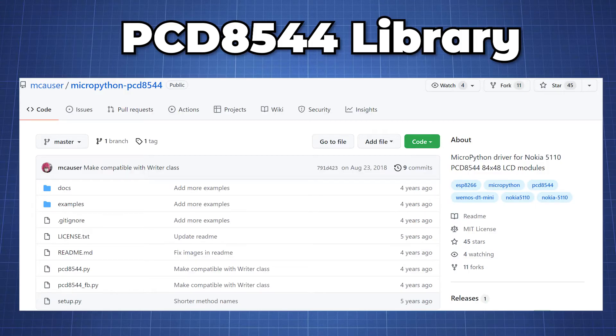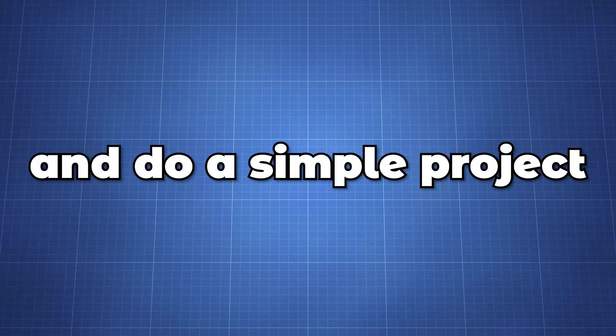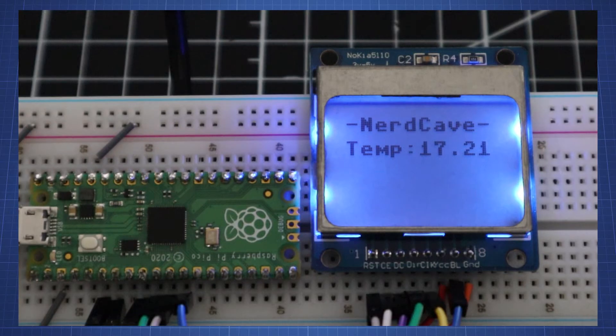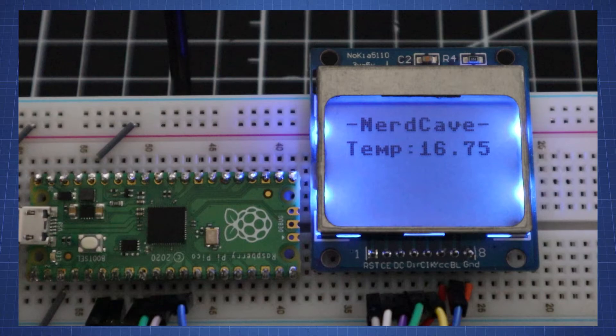We will look at the library in MicroPython written by Mike Houser and do a simple project to display the onboard temperature sensor of the Raspberry Pi Pico to the screen and finish off by looking at other examples.